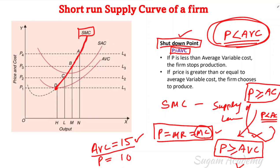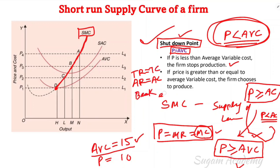If price is less than average variable cost, then the firm stops production. If price is greater than or equal to average variable cost, then the firm chooses to produce. So this is the short-run supply curve of a firm and the shutdown point. The shutdown point is where price equals average variable cost. The break-even point is where average revenue equals average cost, or total revenue equals total cost.